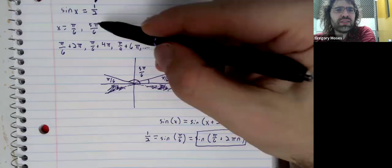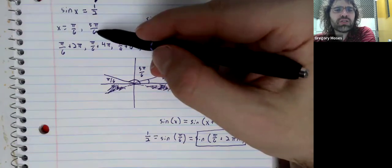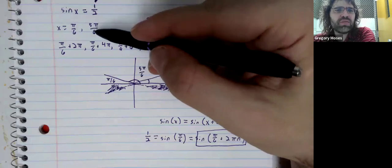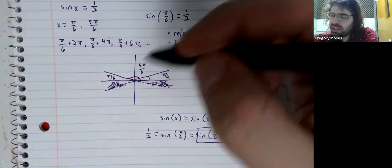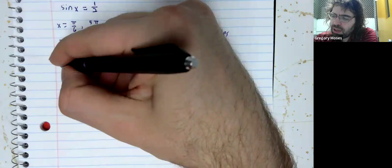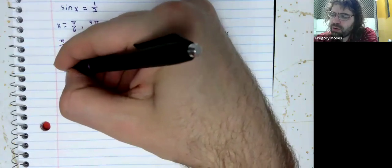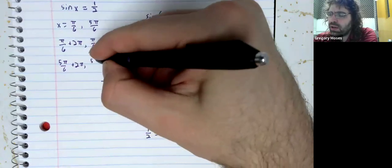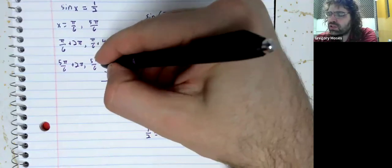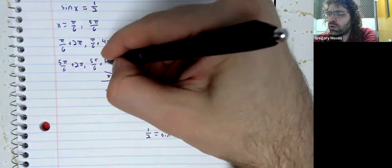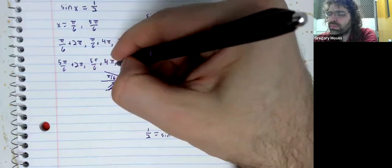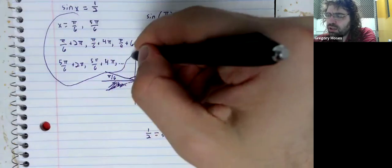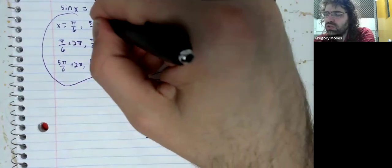And precisely the same thing works with 5 pi over six. Because of periodicity, 5 pi over six plus 2 pi, 5 pi over six plus 4 pi, etc. These are all solutions.